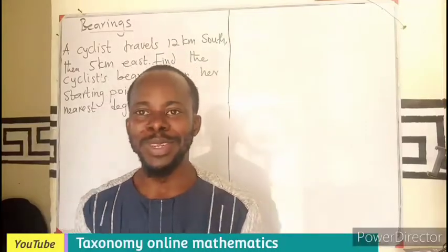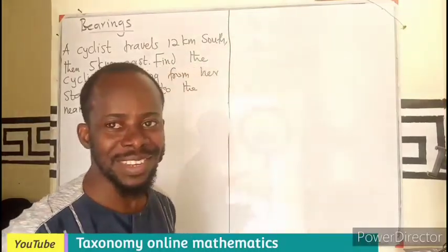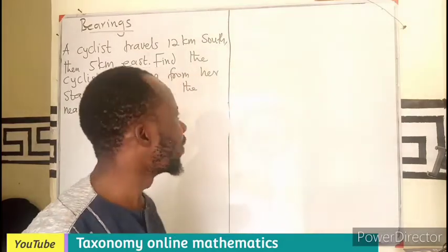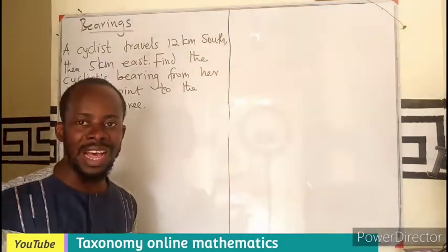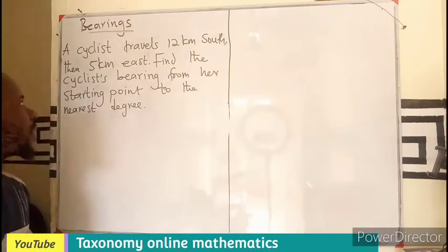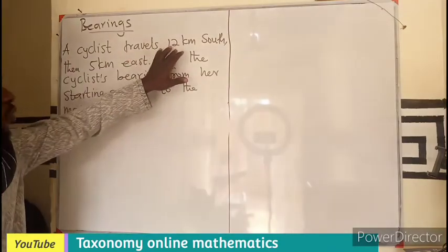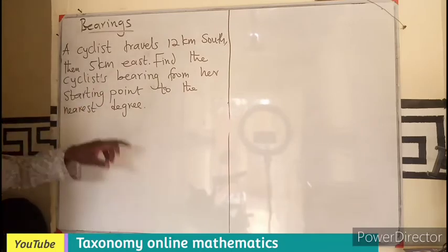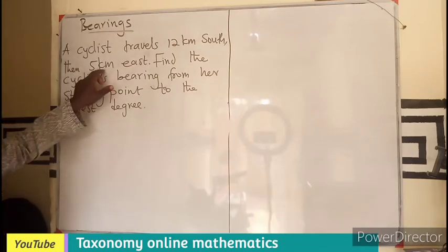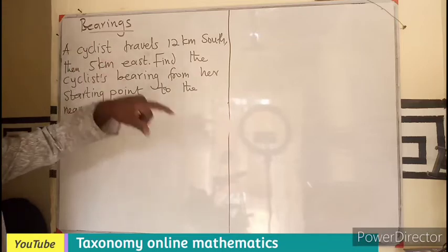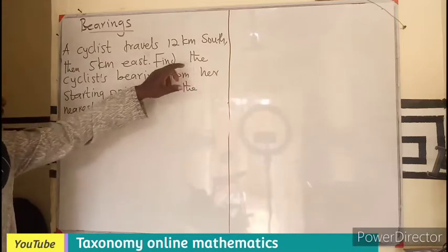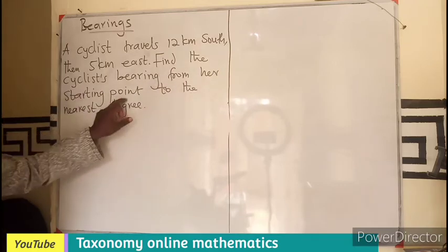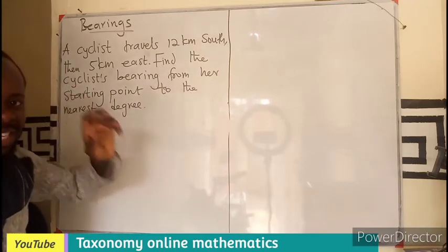Hello, welcome to Taxonomy Online Mathematics. We are still on the topic Bearing. There is a question we want to produce an answer to. A cyclist travels 12 kilometers south, then he travels 5 kilometers east. We are asked to find the cyclist's bearing from her starting point to the nearest degree.